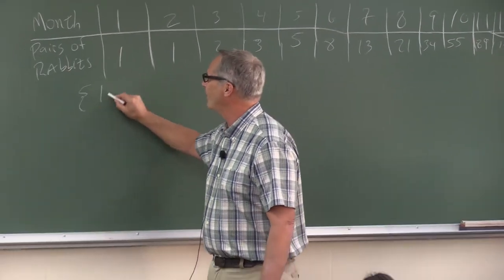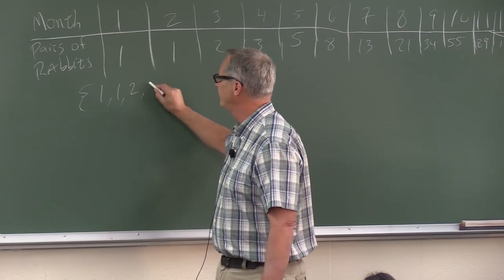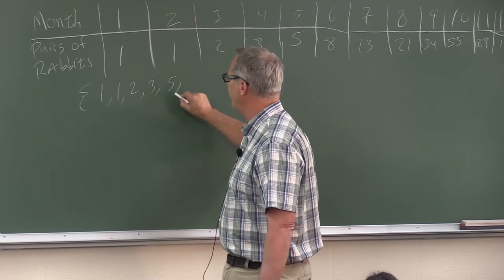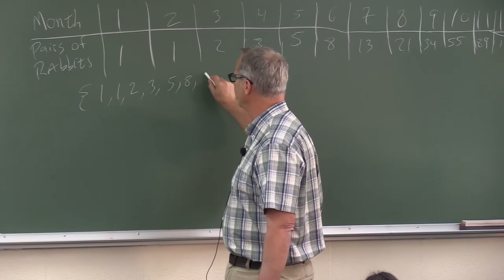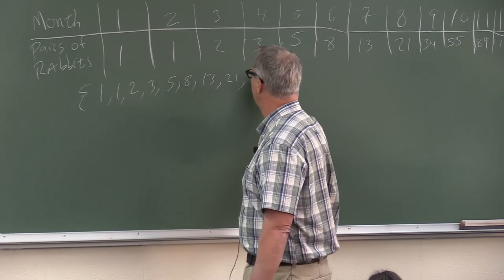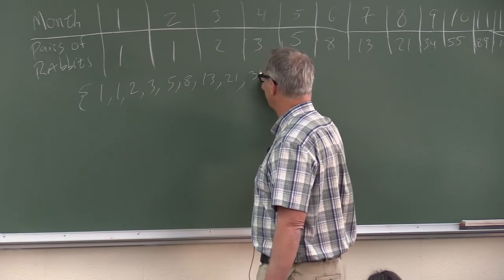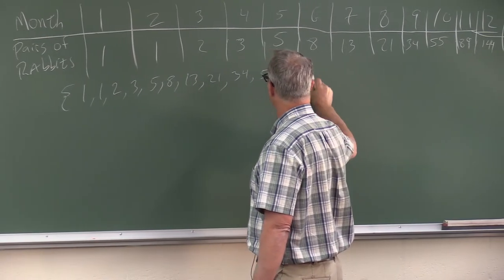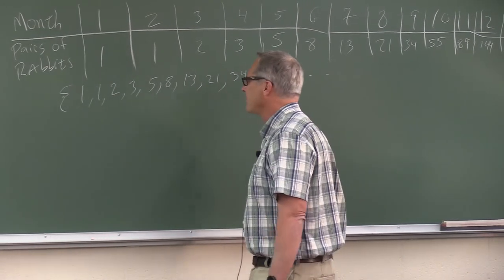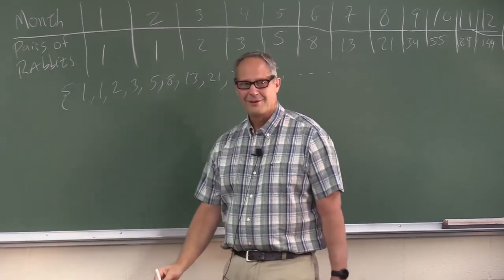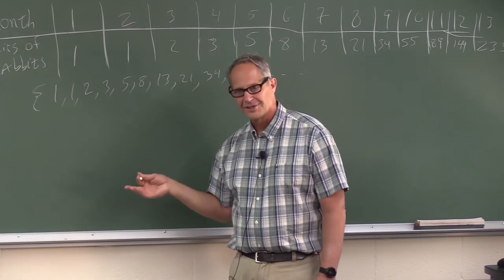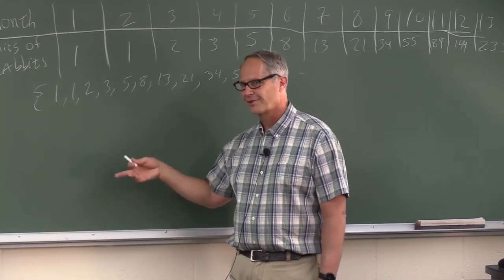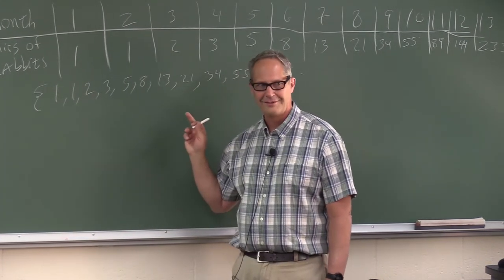So there's the Fibonacci sequence: 1, 1, 2, 3, 5, 8, 13, 21, 34, 55. One thing we could do is generate another sequence by looking at the squares of the terms of the Fibonacci sequence.